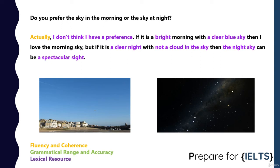There are a lot of IELTS questions that ask 'do you prefer,' and it's very useful to say 'I don't think I have a preference,' which means there's not one you prefer over the other. A bright morning with a clear blue sky, or a clear night with not a cloud in the sky — the night sky can be a spectacular sight. If something is spectacular, it's marvelous, it's wonderful.